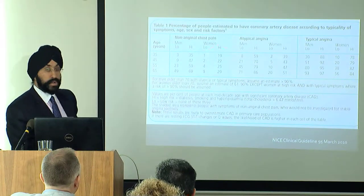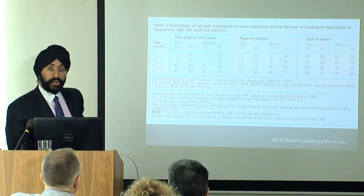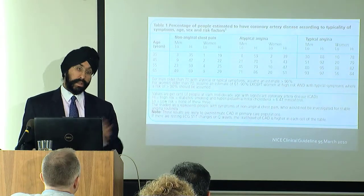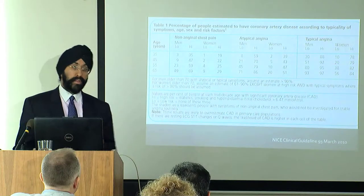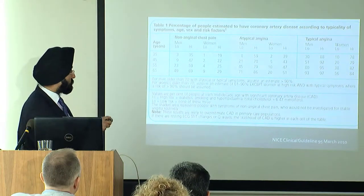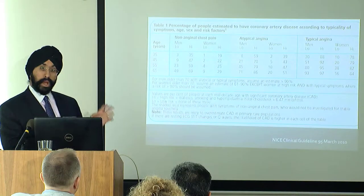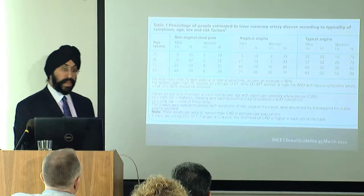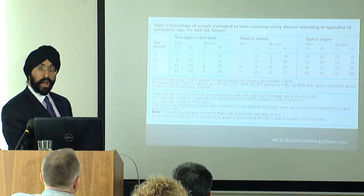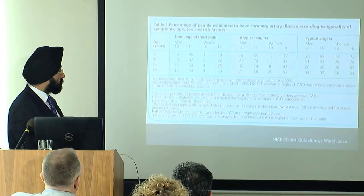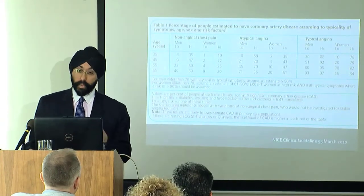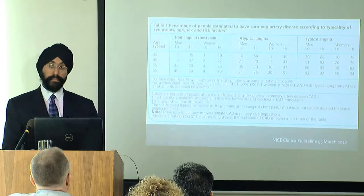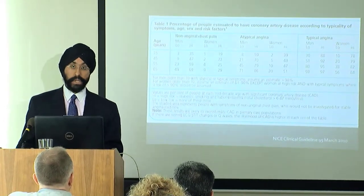Traditionally over the last five or ten years, we wouldn't have investigated people with non-anginal chest pain — we would have said this is not cardiac. But now we are looking at trying to risk stratify these people better by working out their pretest probability and whether they're at high or low risk. A lot of these people will now be stratified to progress on to having further diagnostic tests — a very important implication of the NICE guidelines.